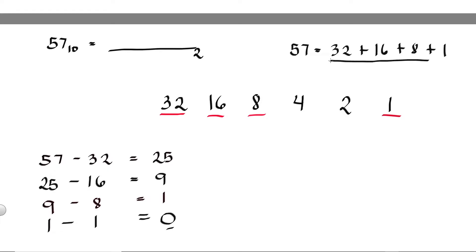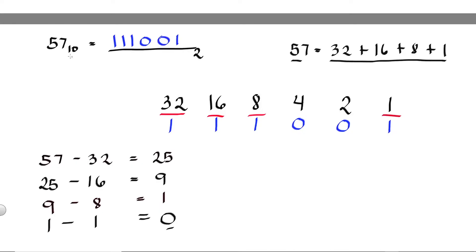So to get 57 we have 32 plus 16 plus 8 plus 1. Make sure these numbers add up to 57. So we have 32 — put 1 under 32. We also have 16 — put 1 under 16. We have 8 — put 1 under 8. We don't have 4, so put 0 under 4. We don't have 2, so put 0 under 2. And we do have 1, so put 1 under 1. So we have 1, 1, 1, 0, 0, 1 as the binary equivalent of 57 decimal.